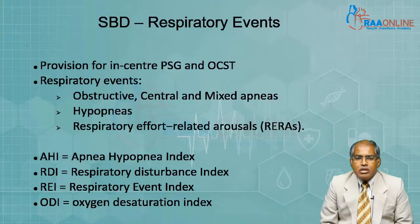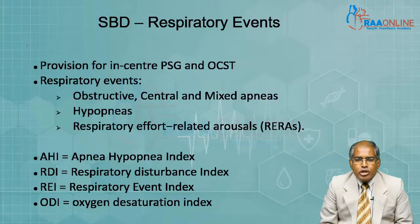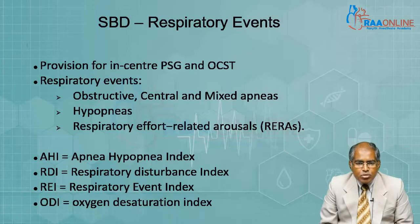The respiratory events recorded in the study are classified as obstructive, central, or mixed apneas, hypopneas, and also respiratory effort-related arousals, or RERAs. Based on the number of events during monitored sleep, we get an index of how many events happen per hour. The apnea-hypopnea index, or AHI, is the number of apneas and hypopneas occurring per hour during the whole monitoring time.